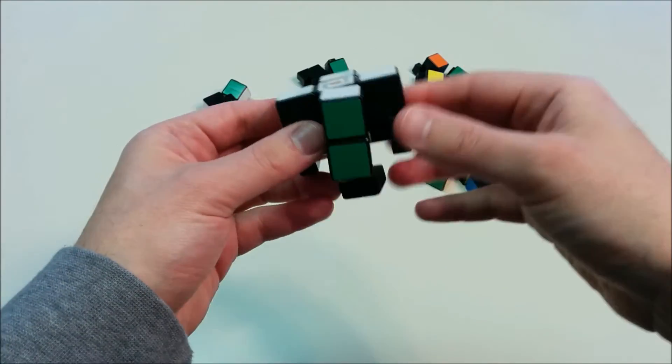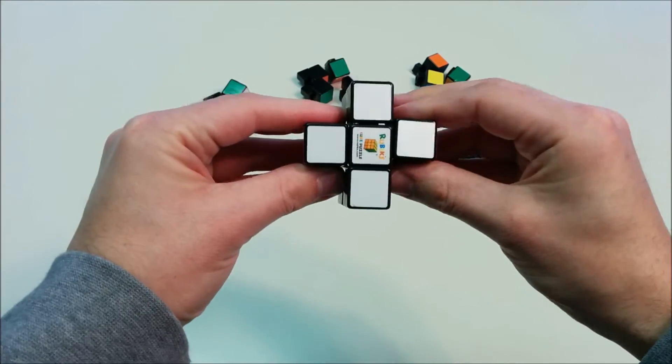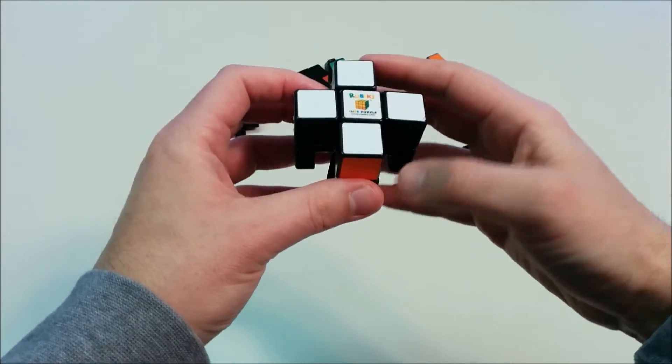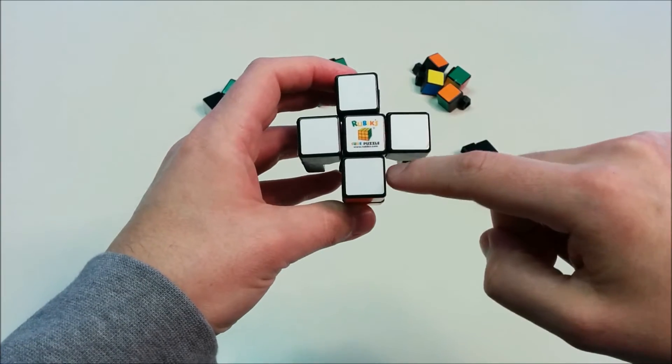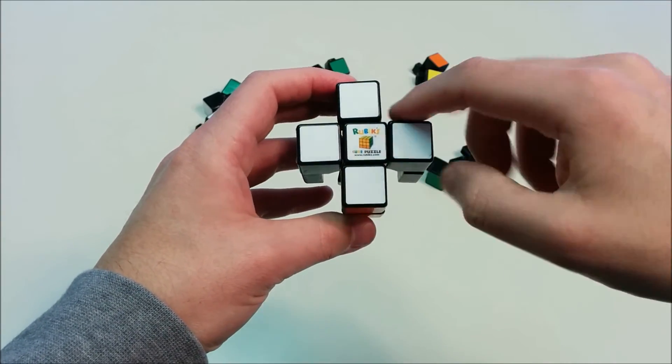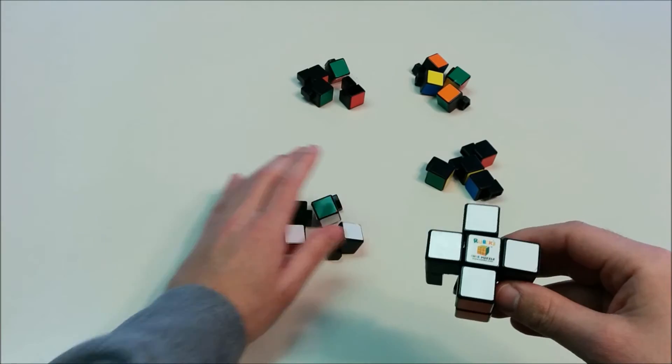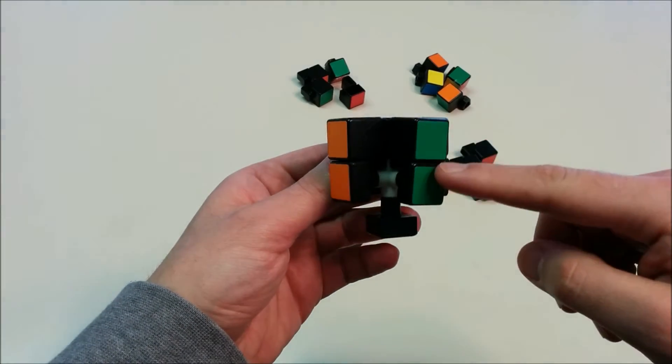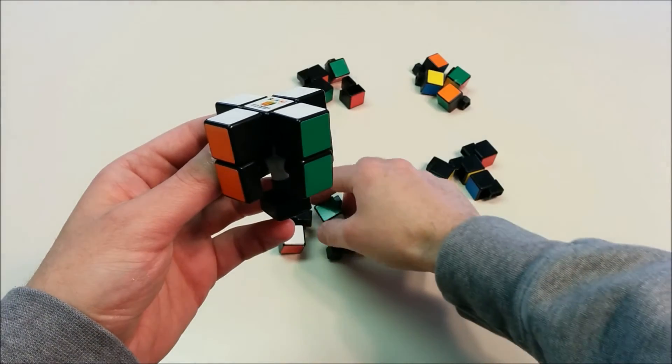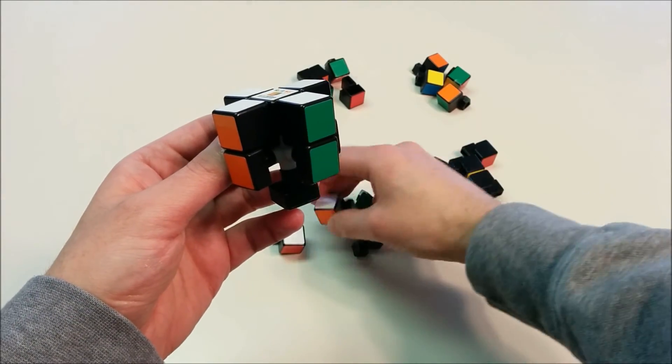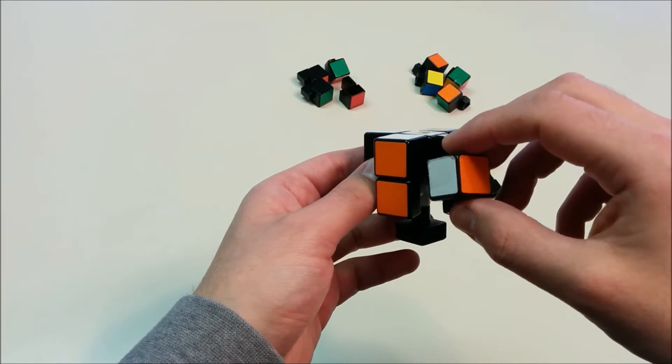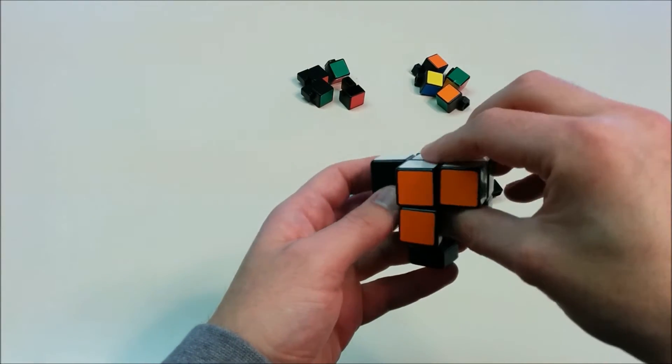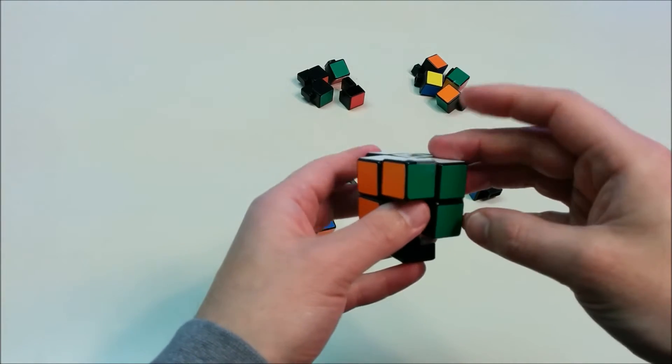The next step in the layer method will be to solve for the corner pieces of the white layer. So there are four corner pieces, and we're going to find the group of corner pieces which have the white corners. So here we have an orange and white and green side. So there's one corner which has these colors, and we put it in the correct orientation.